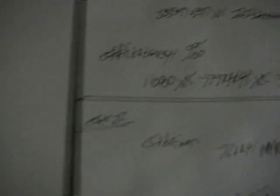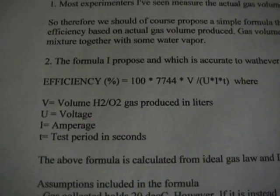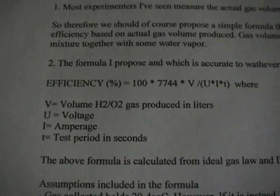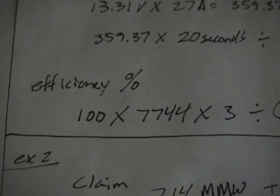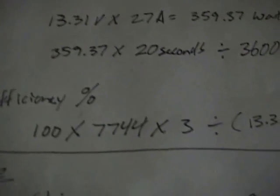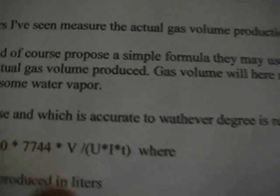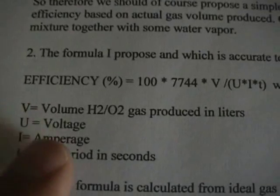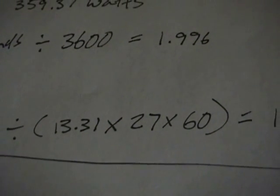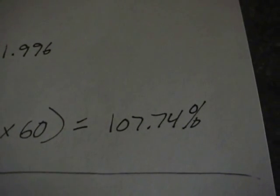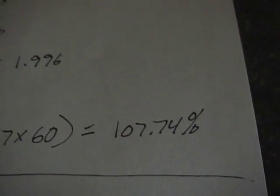I've also got another equation here to figure out the percentage of efficiency. Efficiency percent equals 100 times 7744 times V — the volume of gas produced in liters, which he claims is 3 — divided by voltage times amperage times test period in seconds: 13.31 times 27 times 60. So what we're getting is 107.74% efficient, which clearly breaks Faraday's Law.